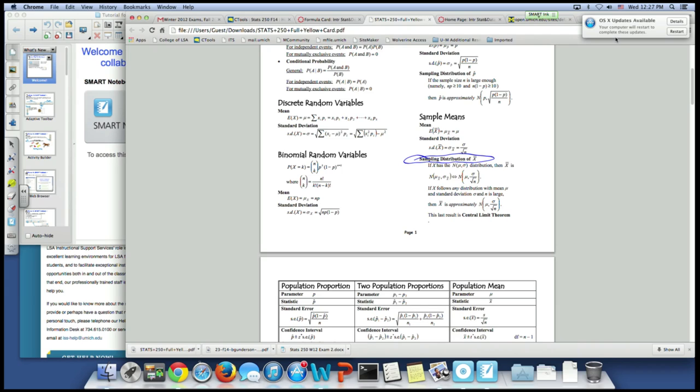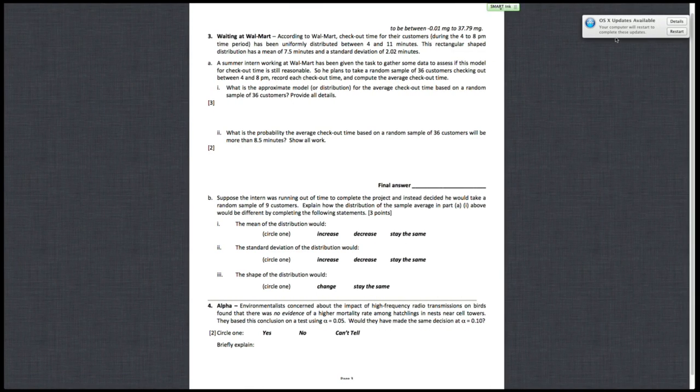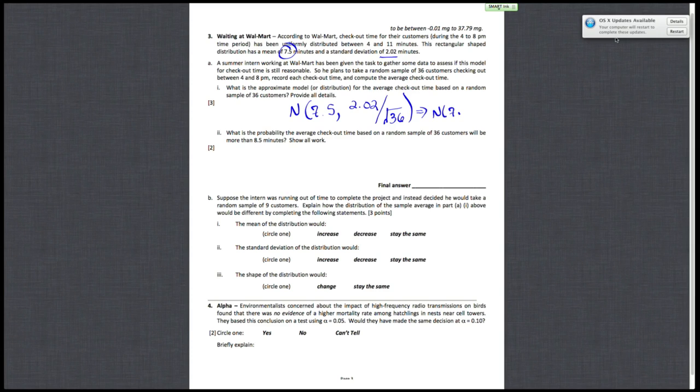So you can see that from the formula card, your sampling distribution of x bar is normal with the population mean mu, the population standard deviation sigma, and then the square root of your sample size. So if you go back to the question, first you have that it's normal. So the mean is your population mean, which is 7.5 minutes. And then your standard deviation for the sampling distribution of x bar is just your population standard deviation, so 2.02 divided by the square root of your sample size, so 36. And at the end, you should get normal 7.5 and then 0.3367.